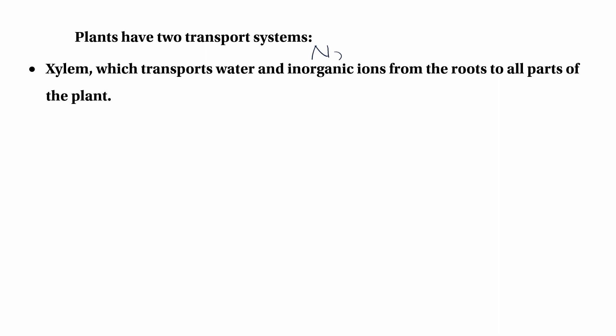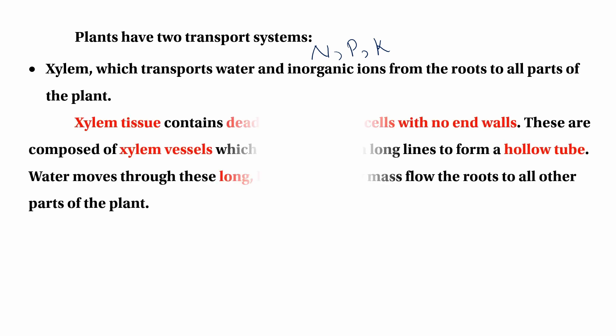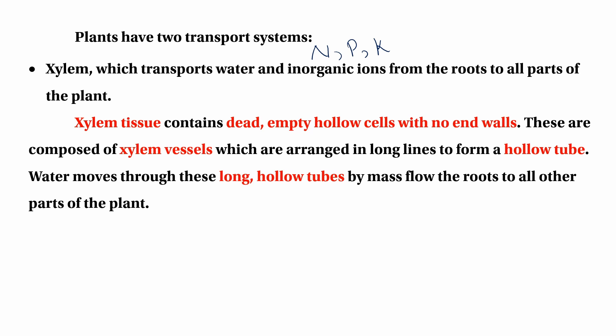The plant has two transport systems: xylem, which transports water and inorganic ions. This is the mineral source of xylem. Inorganic ion solutions include nitrogen, phosphorous, and potassium. Inorganic compounds are essential; these include carbohydrates as essential compounds.